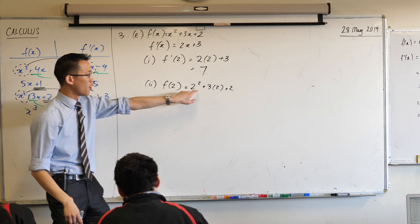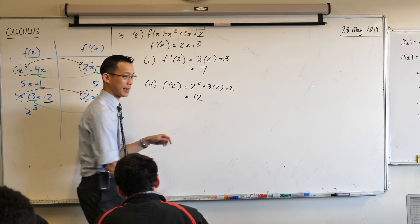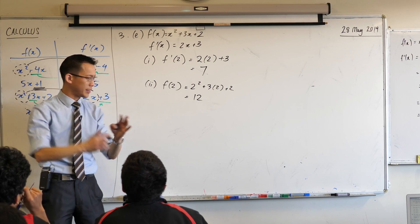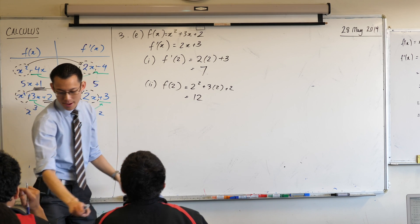Now we can start to evaluate. 4 plus 6 plus 2. Last I checked, that was 12. Very good. Okay. Now this is a y-coordinate, right? So this is not about how fast are you going. This is about where are you, right? You've got a y value of 12. Part 3.